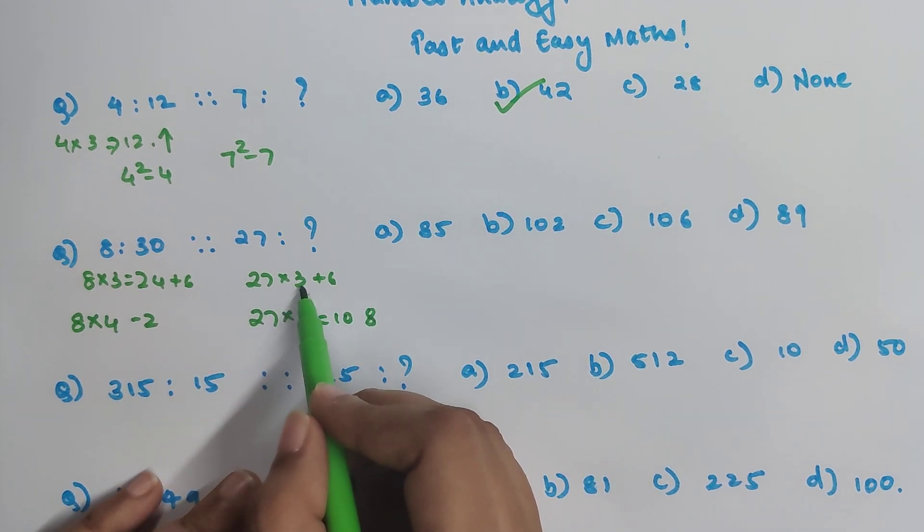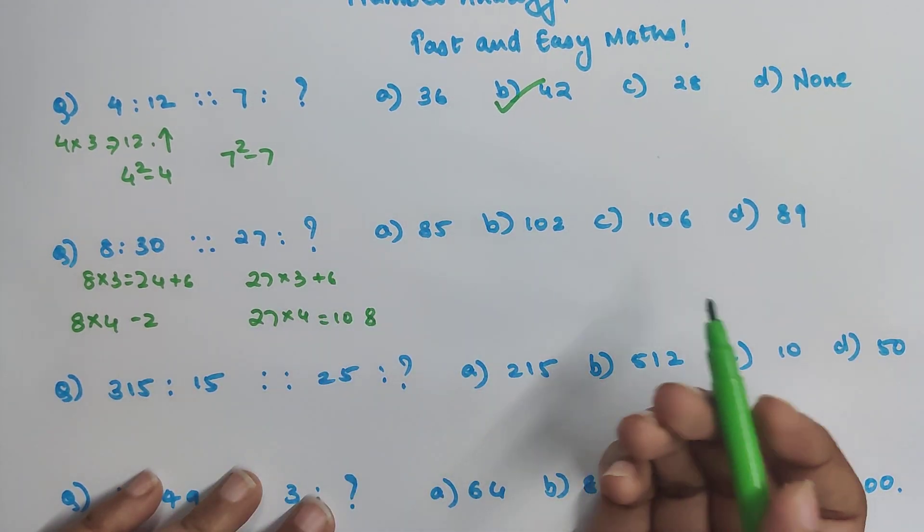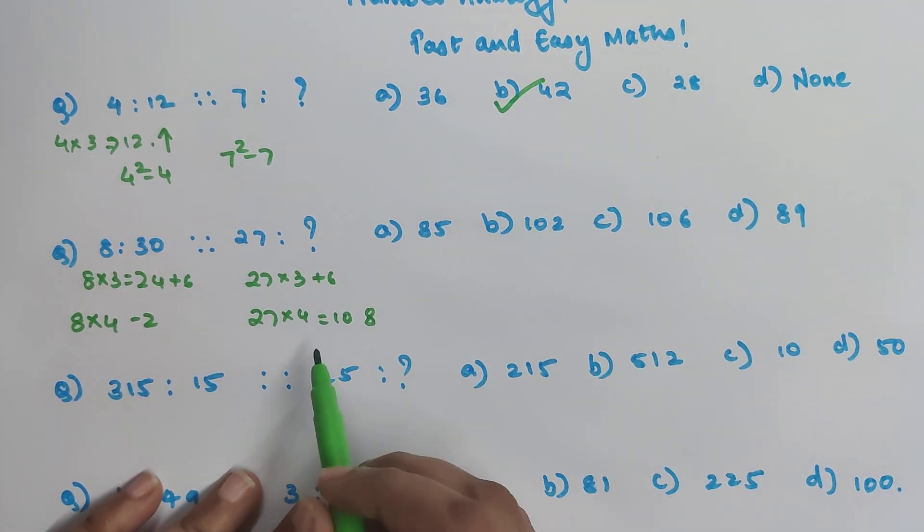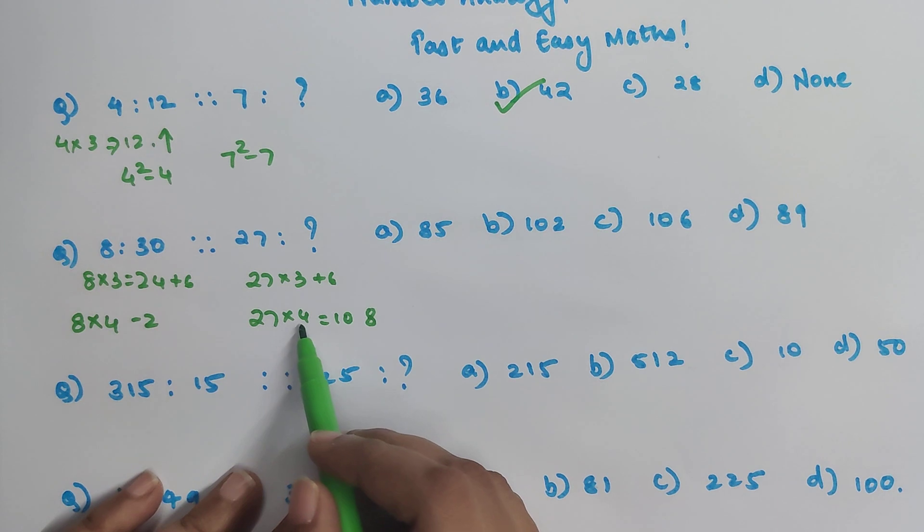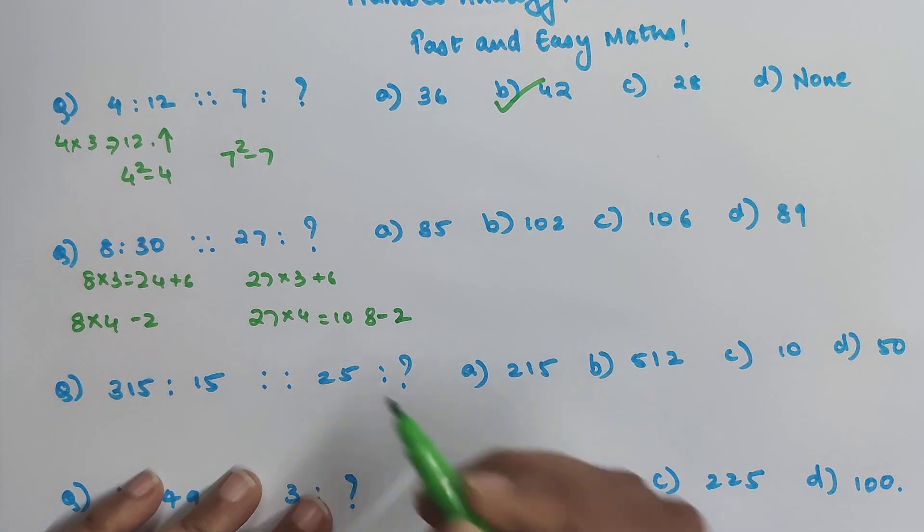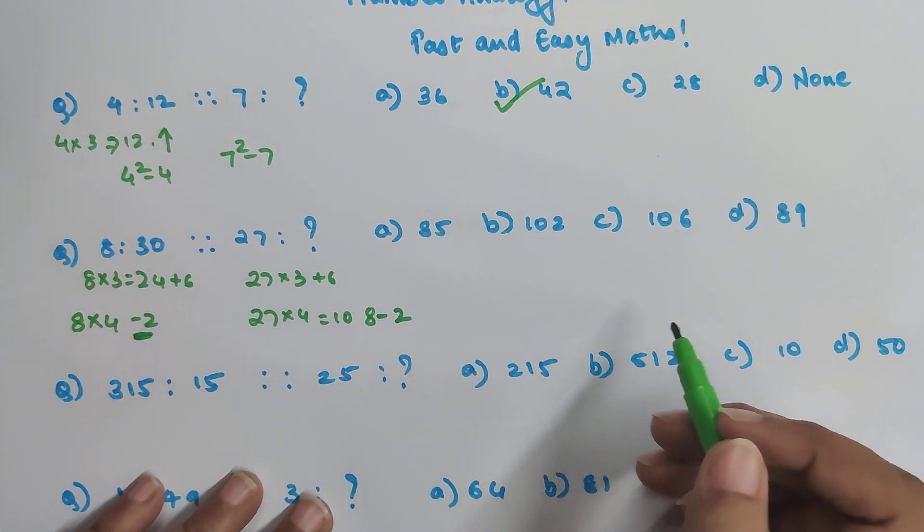27 into 3 would be 81 plus 6 would get you 87, yet that is not a part of your answer. So 27 into 4 is going to get you 1, 0, 8 and 1, 0, 8 minus 2. Don't forget the minus 2 over here also, we did it.